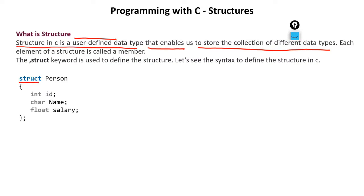A structure is created using the keyword struct, followed by a structure name — for example, person, student, or employee. Inside, you define members of different types: int ID, a character array name of size 10, and float salary. This creates a structure having different data types — integer, character, and float. The struct keyword is used for structure definition.